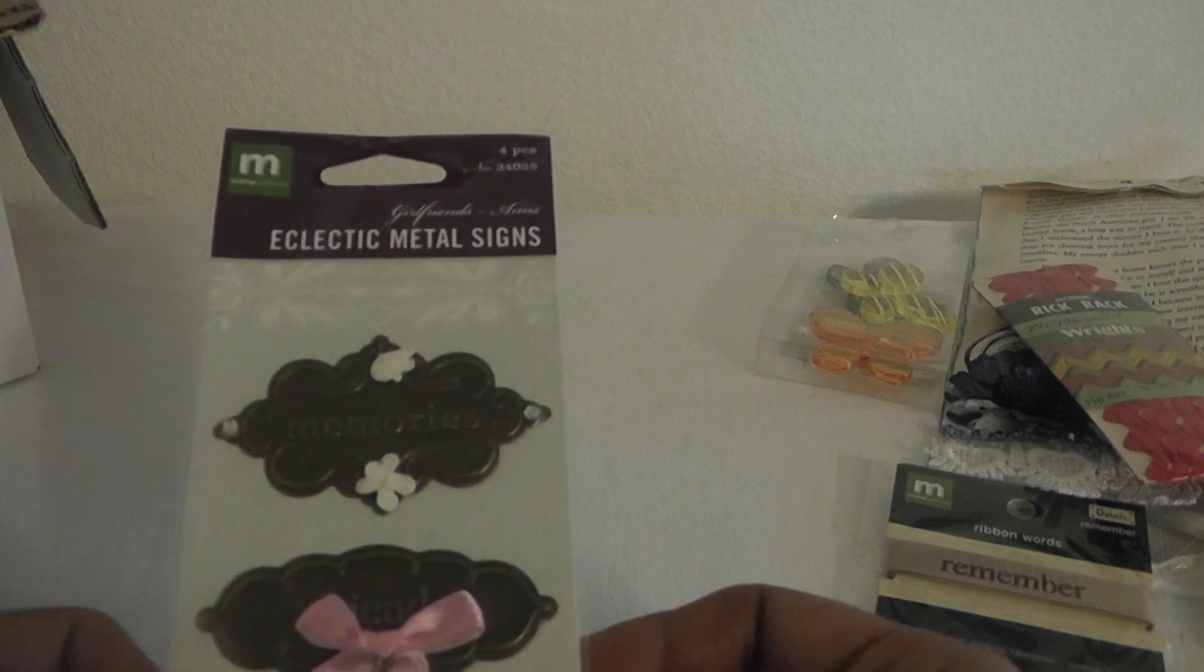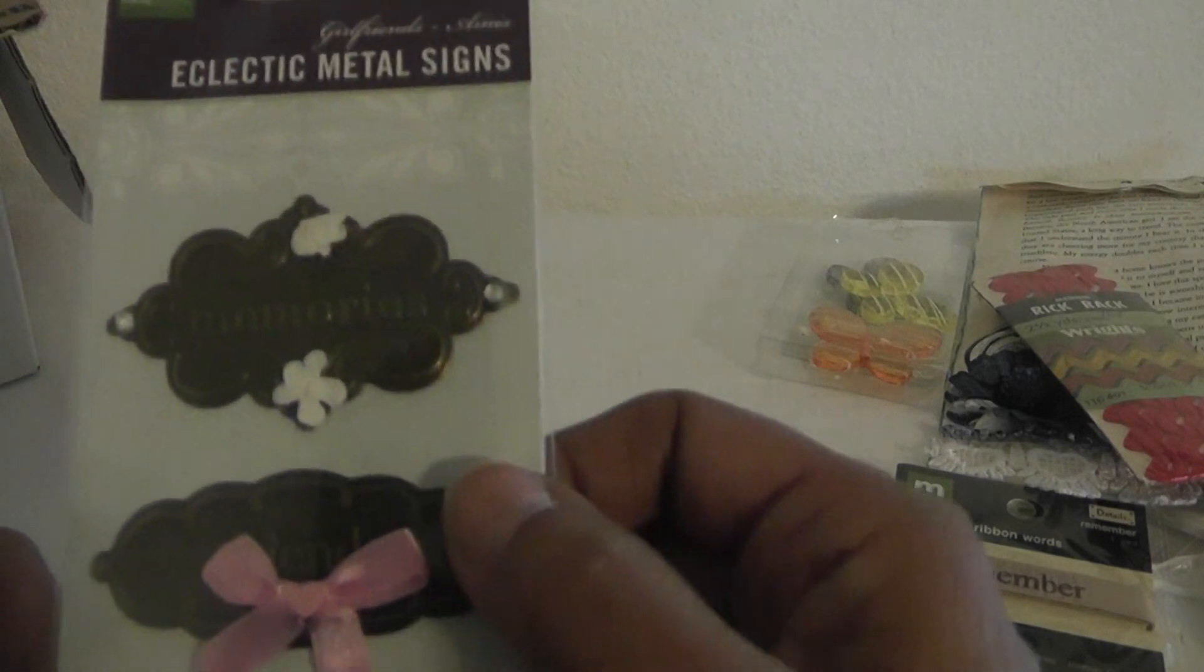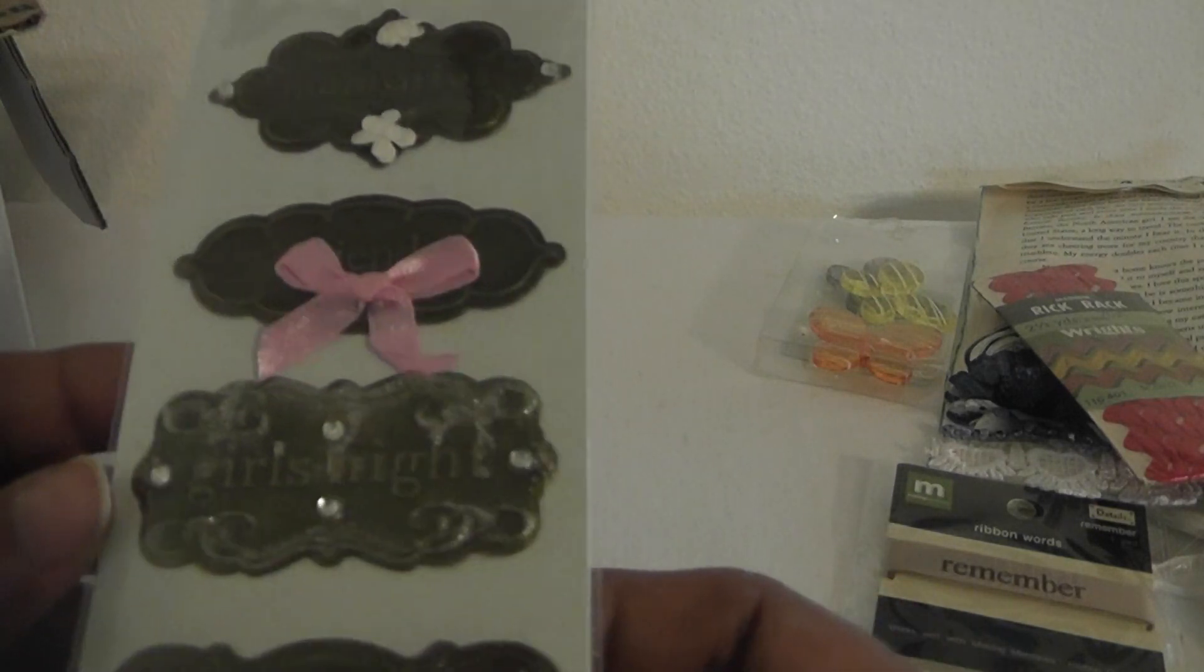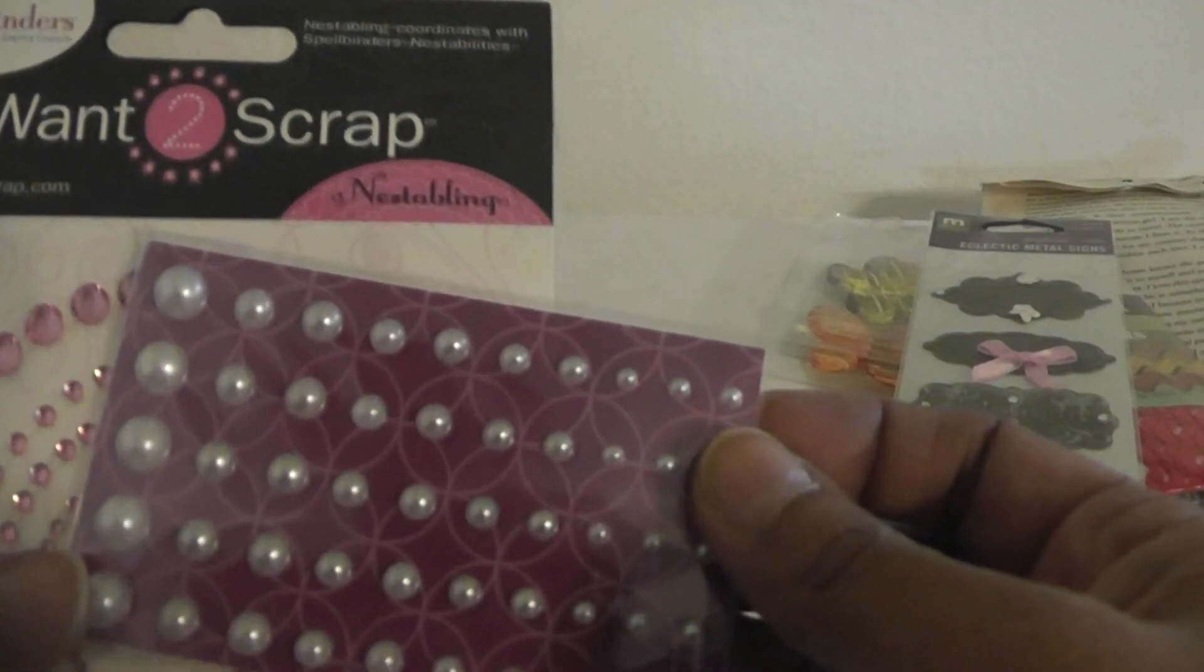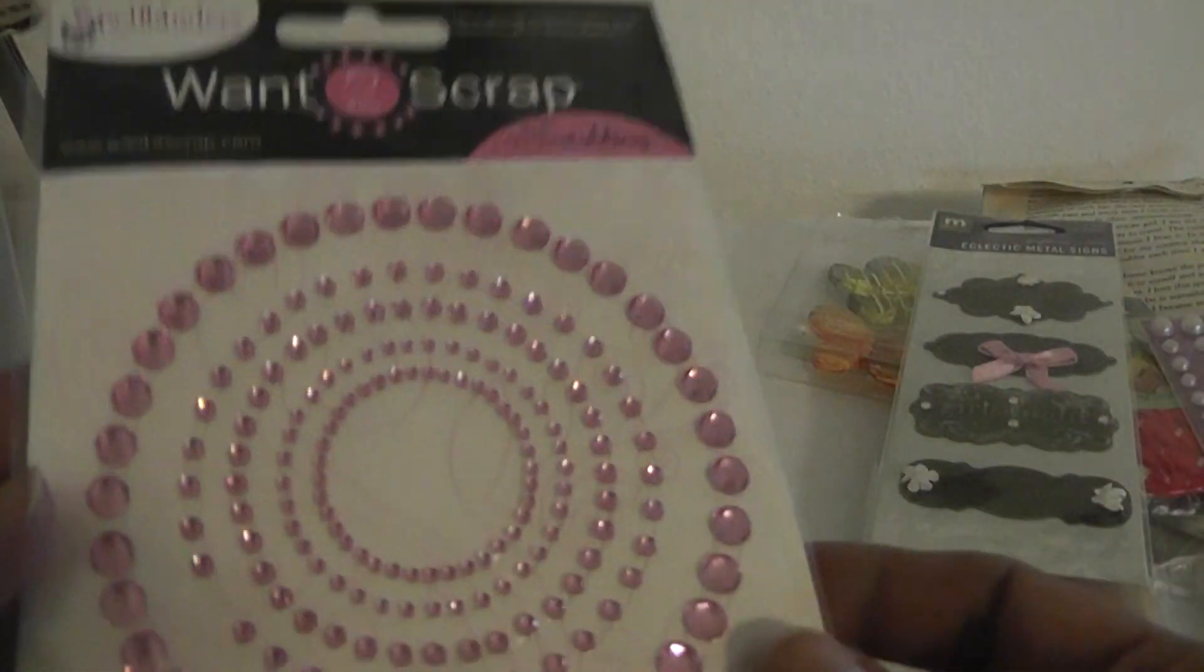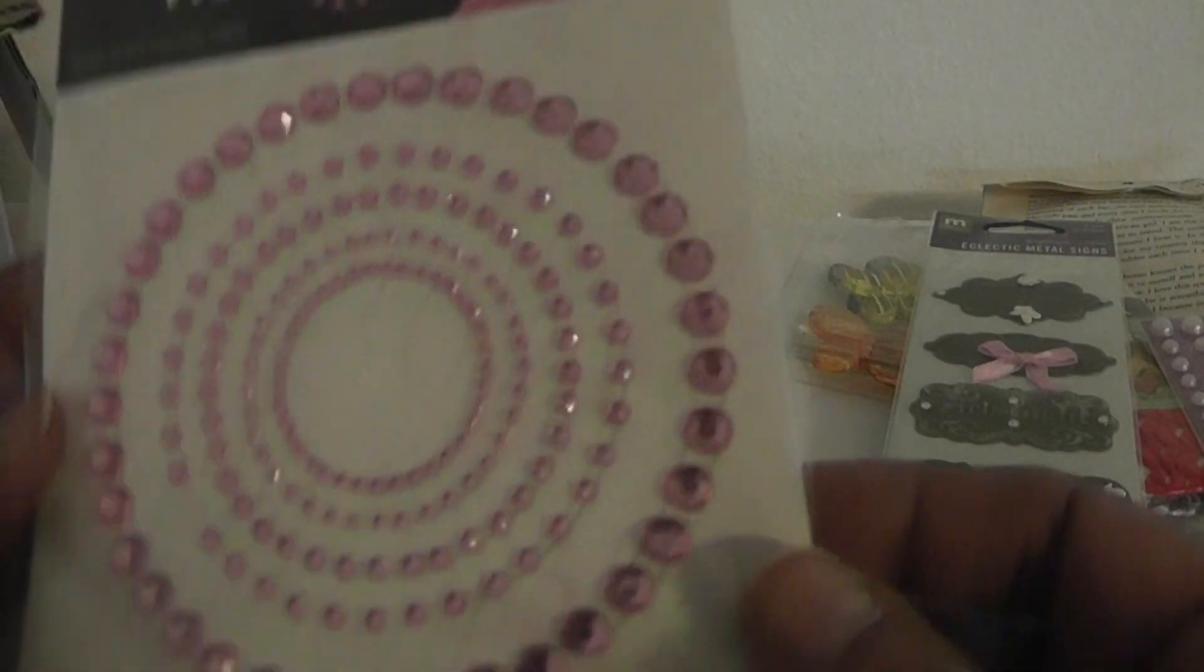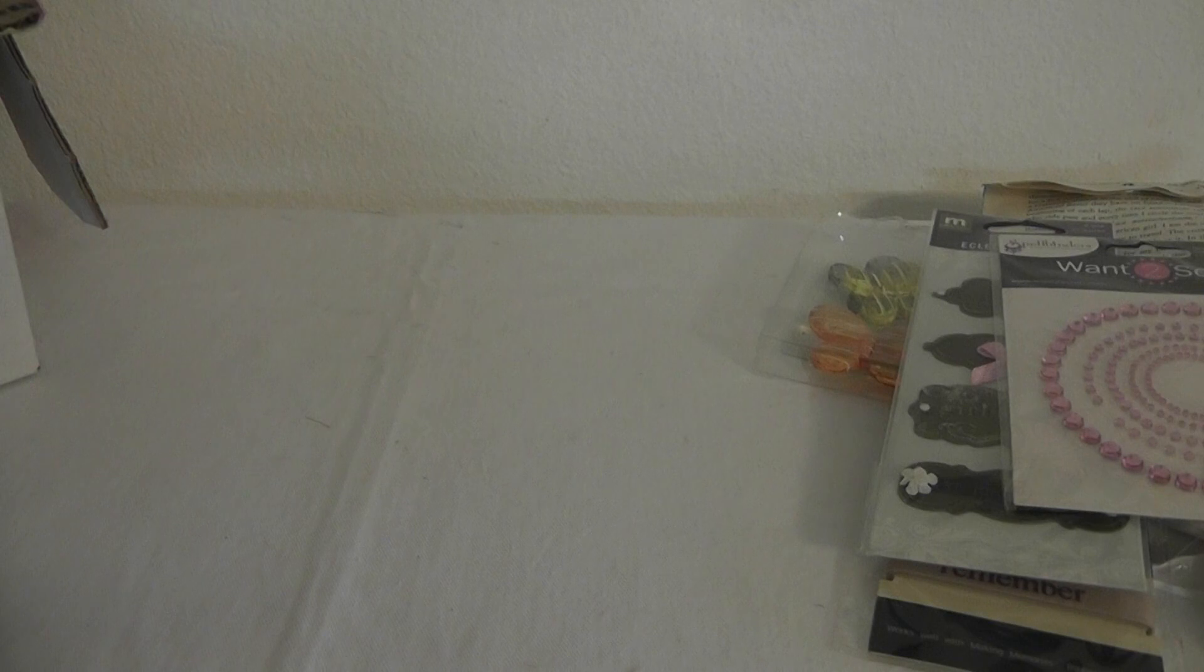And then she sent me this pretty eclectic metal signs by making memories. This says memories, friends, girls, night, and circle of friends. And she sent me some bling. Some pretty little pearls. And some want to scrap round circle blings.